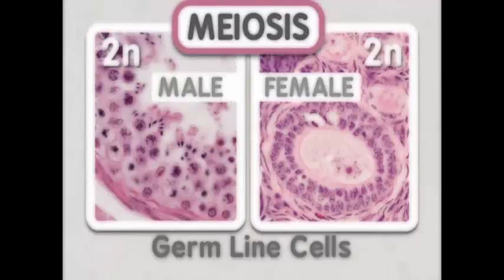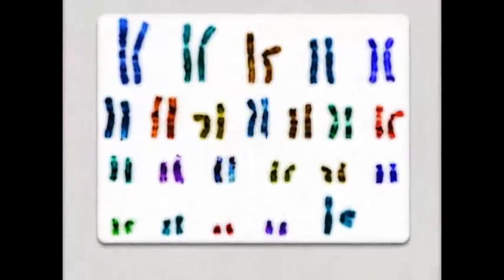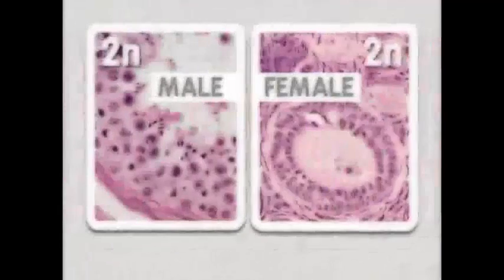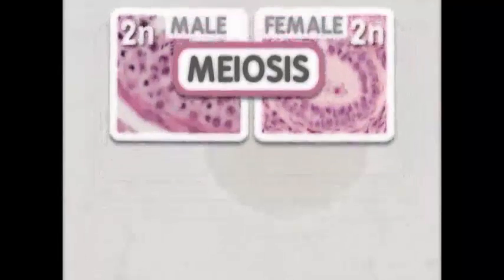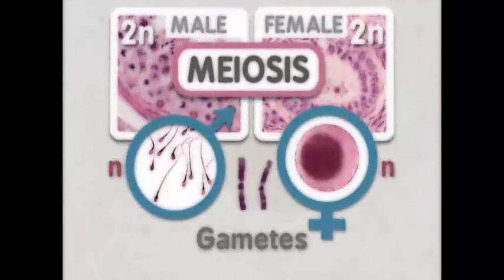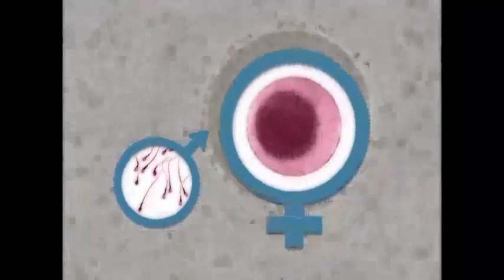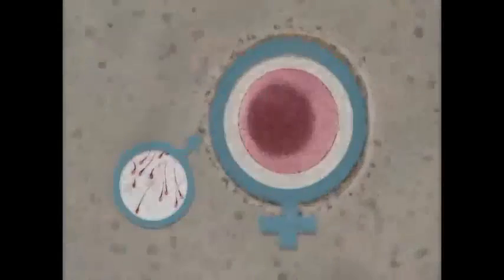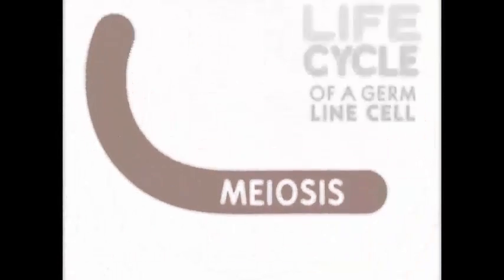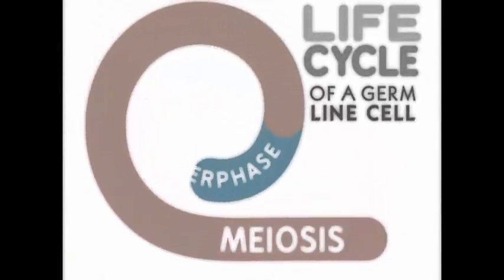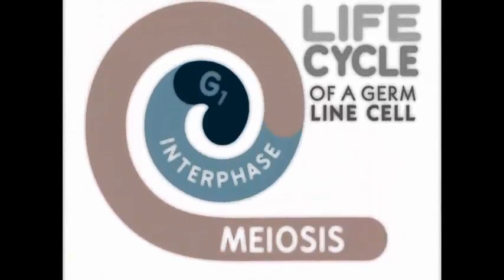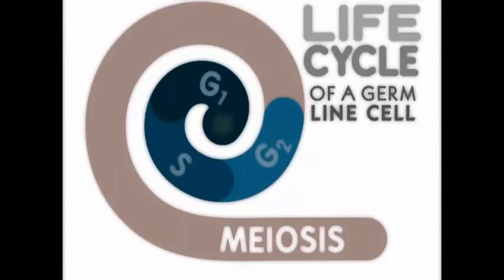Gametes are formed through a process called meiosis. The cells that undergo meiosis to produce the gametes are called germline cells. In diploid organisms, germline cells have two copies of each chromosome. Germline cells undergo meiosis to produce haploid gametes which only have one copy of each chromosome. These haploid gametes fuse to form a diploid embryo that grows into the adult.